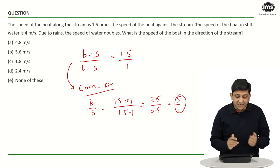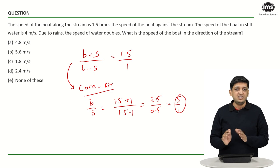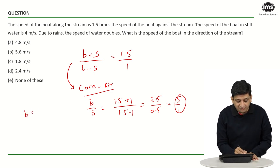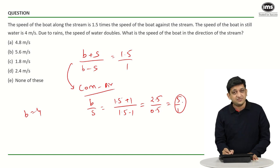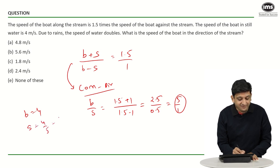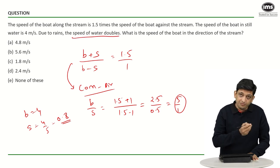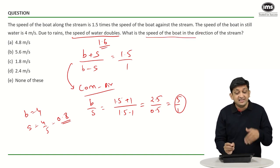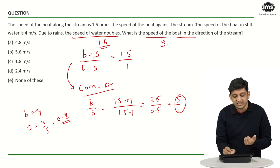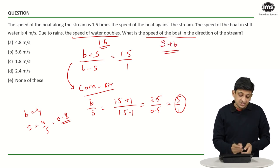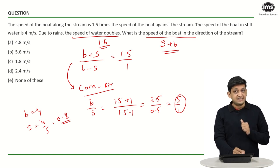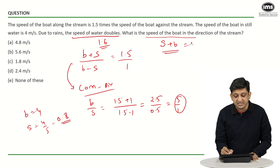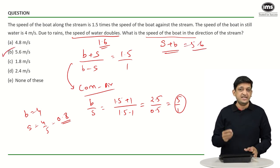We know the speed of the boat in still water is 4 meters per second. So the value of B is 4, and the value of the stream becomes 4 by 5, or 0.8 meters per second. But the speed of water has doubled, so instead of 0.8, the speed of water has become 1.6 meters per second. The speed of the boat in the direction of the stream means B plus S. The value of S is 1.6 and the value of B is 4. So 4 plus 1.6 gives the answer as 5.6 meters per second, which is option B.